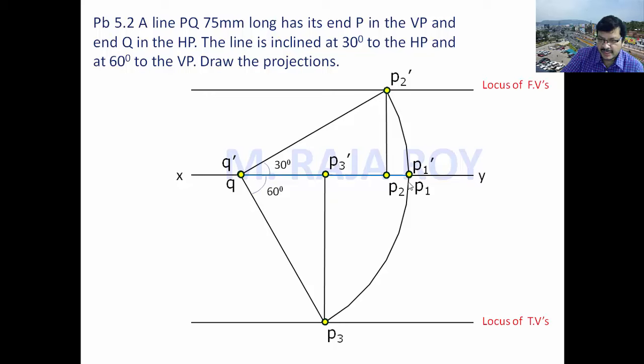Now, when you are tilting this P1 something like this, the meaning of this is, this P point is away from VP. But we have to keep P in the VP. Q is anyway in the HP. So how to satisfy that condition? That I will discuss at the end of the problem.